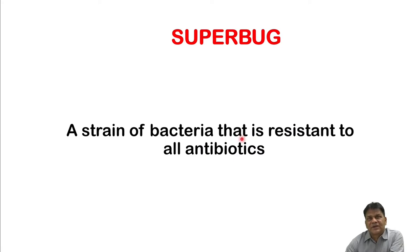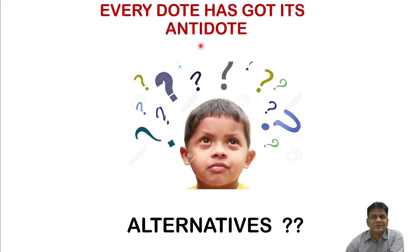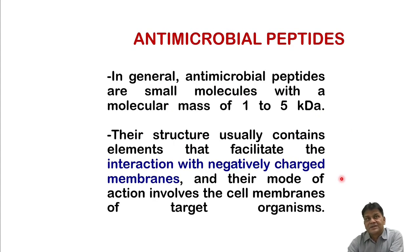Bacteria are a lot smarter in quick and complex decision-making than believed because they multiply very fast. The definition of a superbug is a strain of bacteria that is resistant to all antibiotics. But every problem has a solution — so let us think about alternatives, and the alternatives include antimicrobial peptides, on which a lot of work is being done nowadays.